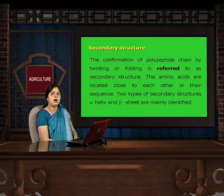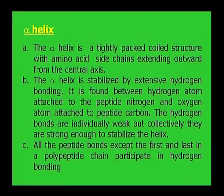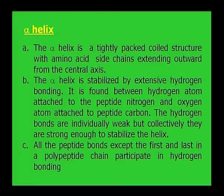We will see how the alpha helix is formed and how the beta sheet is formed. Alpha helix is a tightly packed amino acid chain extending outward from the central axis. The alpha helix is stabilized by extensive hydrogen bonding found between the hydrogen atom attached to the peptide nitrogen and the oxygen atom attached to the peptide carbon. The hydrogen bonds are individually weak, but collectively they are strong enough to stabilize the helix. All peptide bonds except the first and last in a polypeptide chain participate in hydrogen bonding.